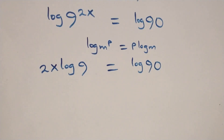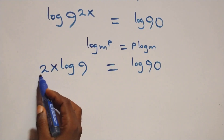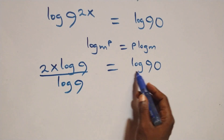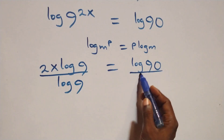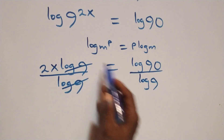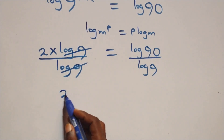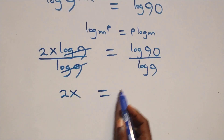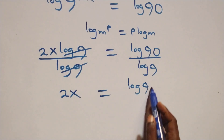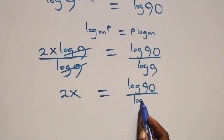The next step: divide both sides by log 9. We divide this side by log 9 and also this side by log 9. The log 9 cancels each other, and we have 2x equals log 90 over log 9.